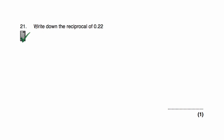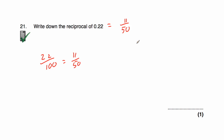Question 21 is a calculator question: write down the reciprocal of 0.22. Convert 0.22 to a fraction — that's 22 hundredths, or 22 over 100, which cancels to 11 over 50. On a calculator, type 0.22 and press equals to get 11 over 50. Finding the reciprocal by flipping gives 50 over 11. As a mixed number: 11 into 50 goes 4 times (44), remainder 6, so 4 and 6 elevenths. Either answer is acceptable.